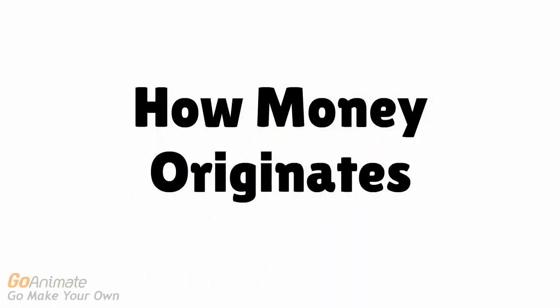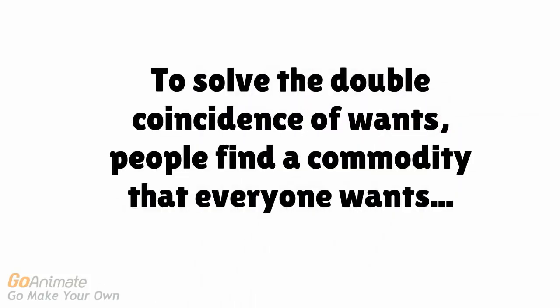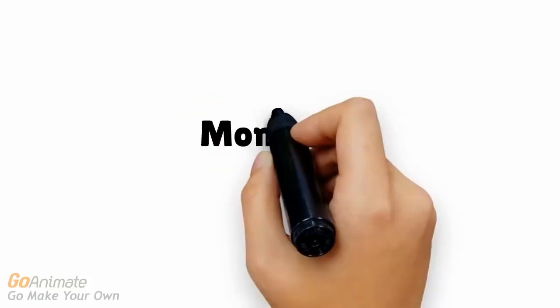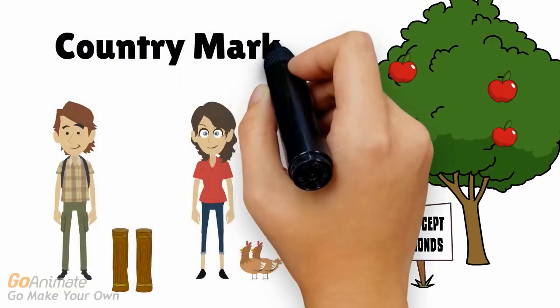And here we come to how money originates. To solve the double coincidence of wants, people will find a commodity that everyone wants — like Billy discovering this diamond mine — and try to gain a surplus of that commodity, not because of its usefulness, but because they can trade it to gain what they want. And that is what money is: a medium of exchange. See how much easier it is to trade now? Everyone is willing to trade his or her goods for diamonds.